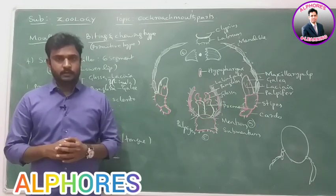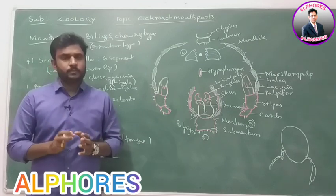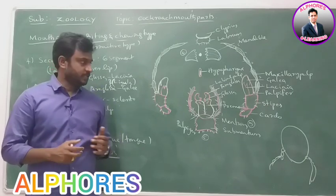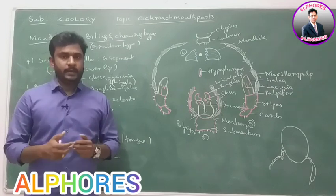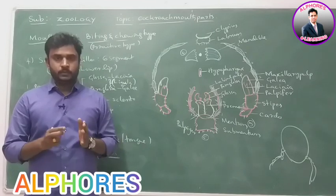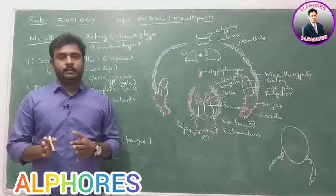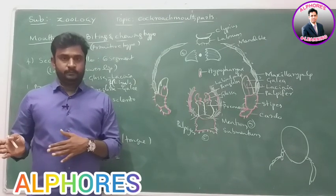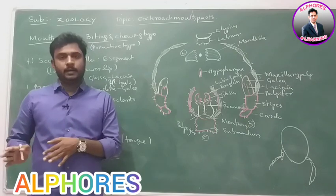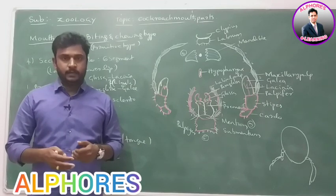Mouth parts of cockroach — I hope you understand. You have to identify all these parts; the part names are somewhat difficult, so practice them. The total head topic is now completed. Next part will be thorax and then abdomen — the second and third tagmata. I will discuss thorax and abdomen in the next classes. Thank you.